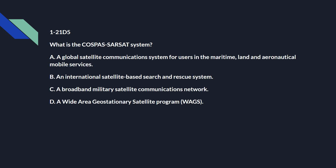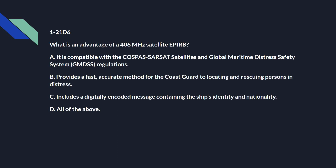1-21 Delta 5: What is the COSPAS-SARSAT system? And that's B: an international satellite-based search and rescue system. 1-21 Delta 6: What is an advantage of a 406 MHz satellite EPIRB? And that's all of the above. It's compatible with the COSPAS-SARSAT satellites and Global Maritime Distress Safety System regulations. It provides a fast, accurate method for the Coast Guard to locate and rescue persons in distress. And it includes a digitally encoded message containing the ship's identity and nationality.